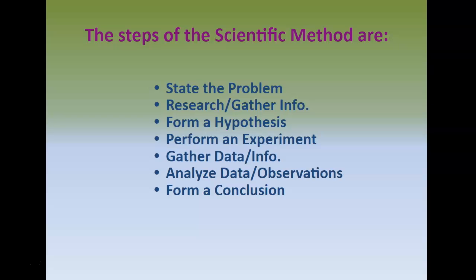One thing I want to make clear: a failed experiment is not a bad thing. If you came up with a hypothesis and it turned out you were completely wrong, that's okay — that just means you've got to come up with a new hypothesis. Scientists spend years trying to solve the same problem and come up with probably hundreds of hypotheses over their careers. If it doesn't work, they've got to come up with a new one. That's the beauty of science — you learn from being wrong and then take that information to come up with a better hypothesis.